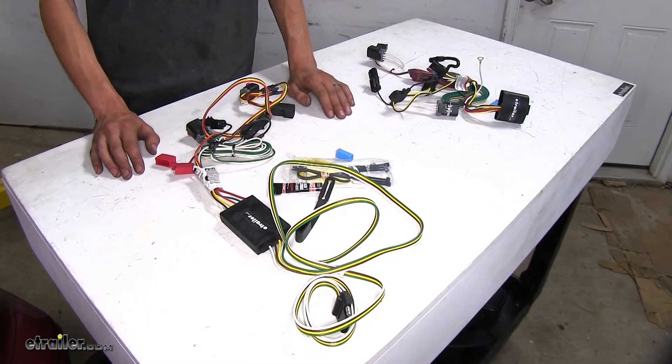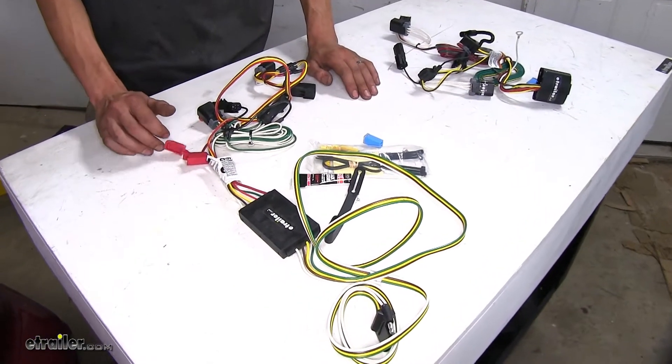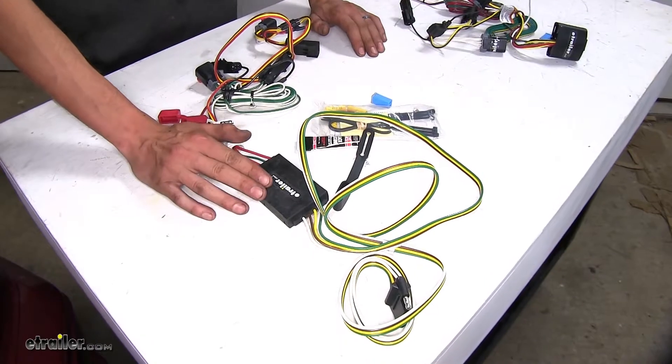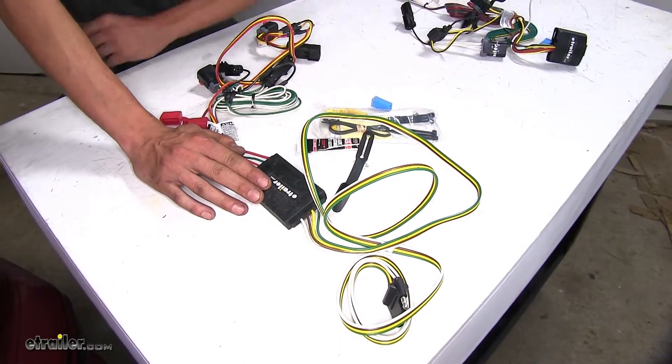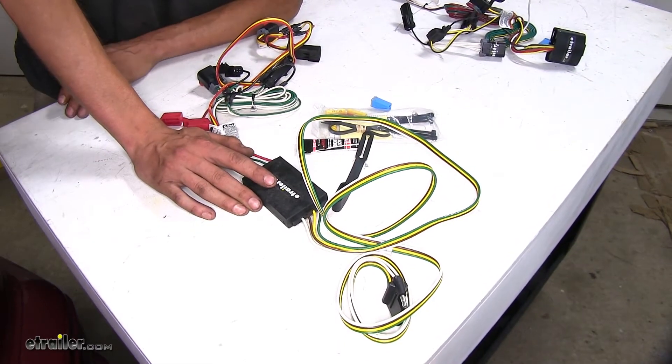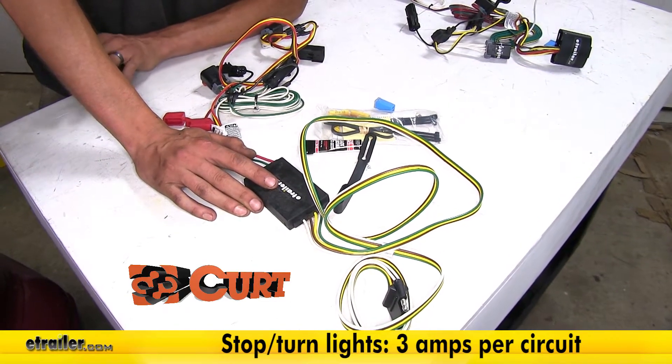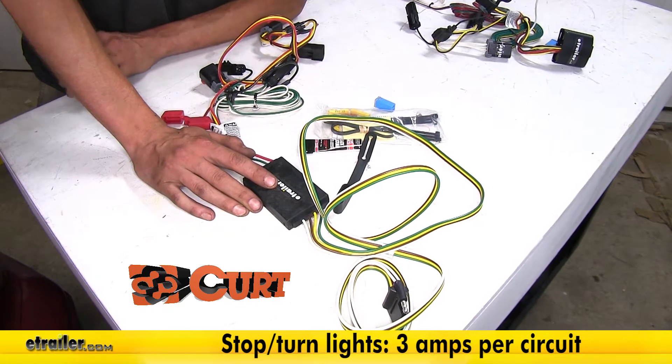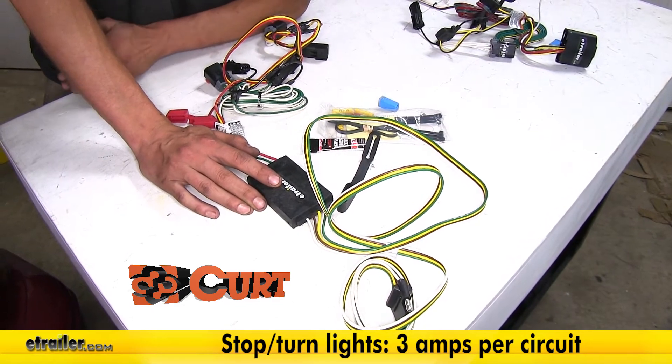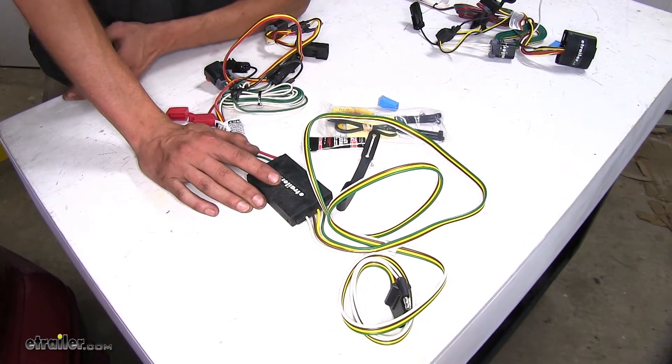Now the first biggest difference that we found is in regards to power output. Our Curt wiring harness here on our turn signal and brake light circuits, we have a total power output of 3 amps per side on the vehicle, which is a sufficient amount of power to tow a trailer with LED lights.